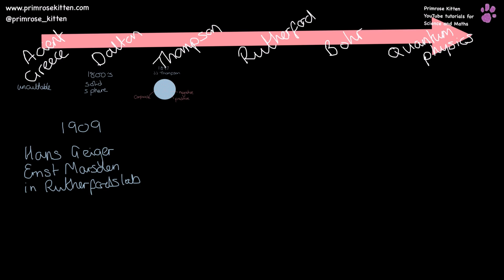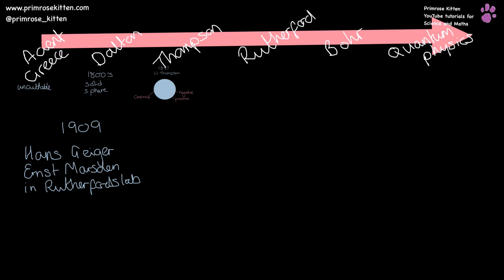In 1909, Hans Geiger and Ernst Marsden were working in a lab with Rutherford. You may think it's slightly unfair that Geiger and Marsden did most of the work but Rutherford is known for it — but things work out that way sometimes. They did the gold foil experiment, using a very thin sheet of gold foil and an alpha particle gun. Alpha particles are helium nuclei — two protons and two neutrons, no electrons — so they have an overall positive charge.